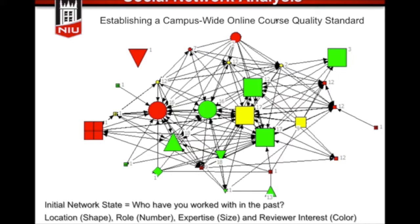The connections survey involved a roster list asking who they've worked with. I also asked who would you seek advice from, because that's another typical social network analysis question to show the power of people in a network. This particular view is 'who have you worked with.' Looking at the ones in the center — the large figures — those tended to be people in faculty development and e-learning departments who do a lot of service work helping people.